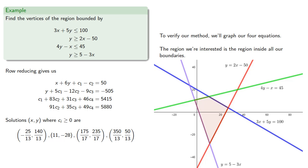And we find that our vertices: negative 25 thirteenths, 140 thirteenths is here. 11 negative 28 is here. 175 seventeenths and 235 seventeenths is here. And 350 thirteenths, 50 thirteenths is here.